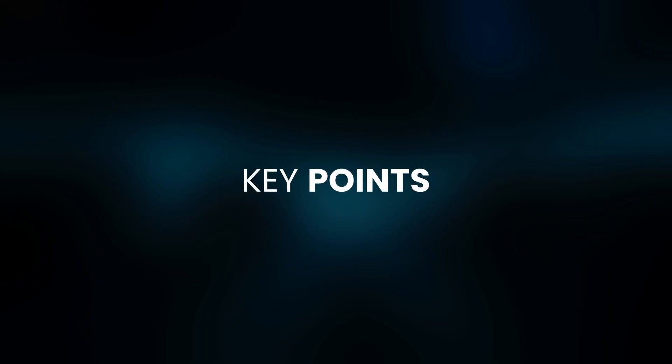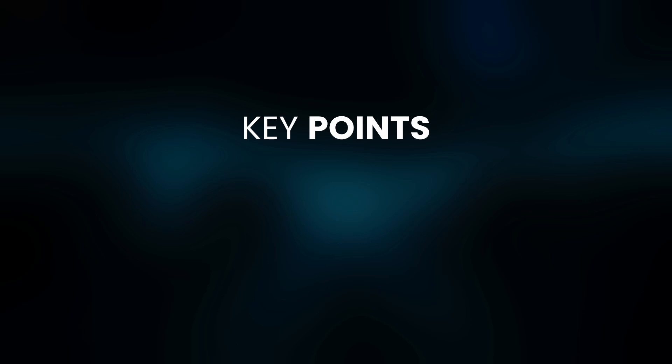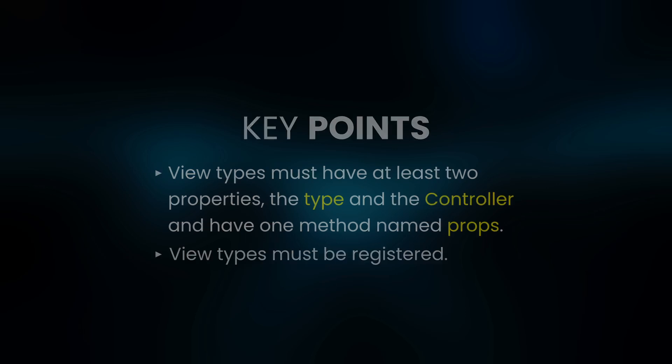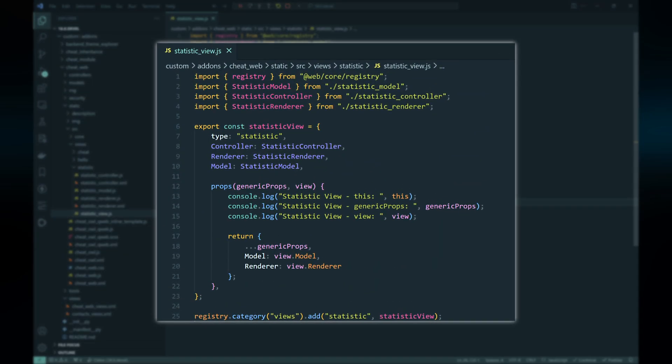From the hello view type we can conclude two key aspects when creating a view type. First, view types must have at least two properties — type and controller — and one method named props. Second, view types must be registered.